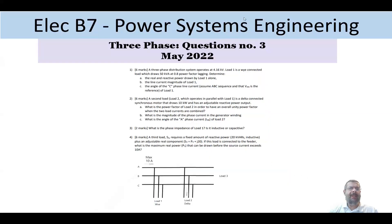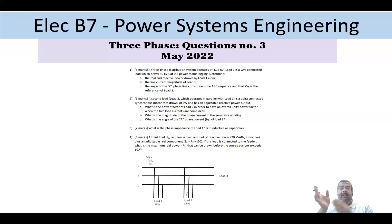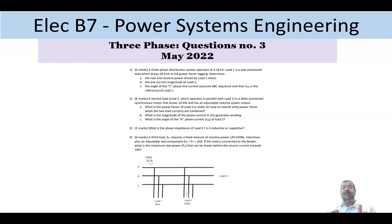Hi everyone, and welcome back to this series of Electrical B7 Power System Engineering BO exam. This is an exam of May 2022, and I noticed that this exam is again following a similar pattern than 2021 and 2020. Basically, it's exactly the same pattern where the first question is a general three-phase question and it is a mandatory question that you have to answer, and then there are six questions and you choose four out of them.